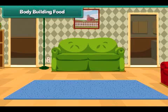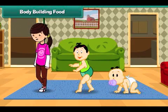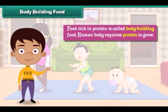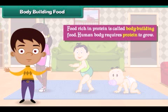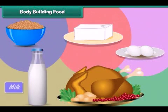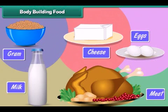Body building food — the human body needs protein-rich food to grow. Food rich in protein is called body building food. Milk, eggs, meat, cheese and gram are examples of body building food.